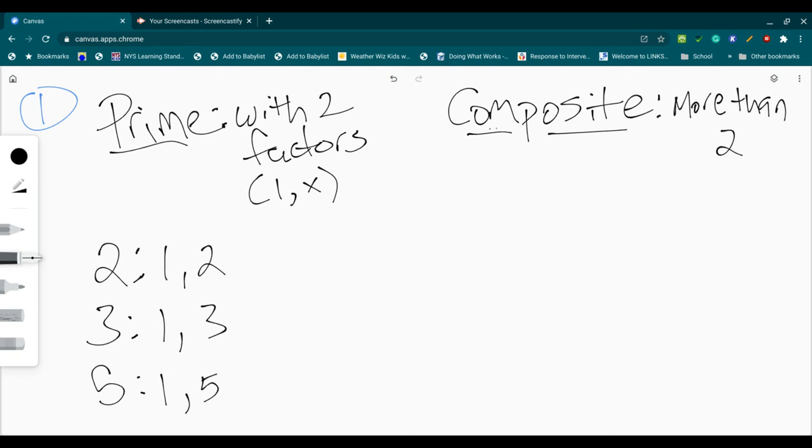These are two numbers that can be multiplied together to equal 1 times 2 equals 2. Sorry about that. 1 times 3 equals 3. Numbers multiplied together that are going to end up with our base number. So 1, 2, 3, 5.